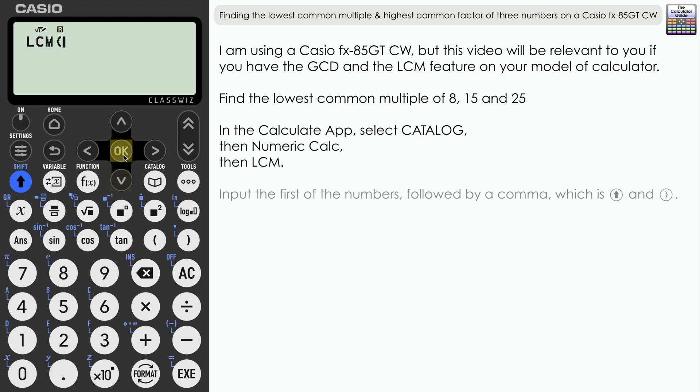In this first example, we will use LCM, lowest common multiple. Start by inputting the first of the numbers. Now I will show you afterwards that it doesn't matter which order you put the numbers in, but I'm going to input them as shown here. We want a comma and then we want to select LCM once again.